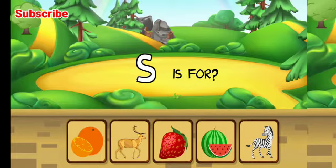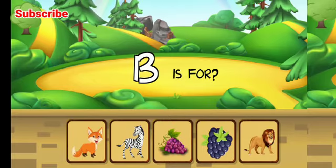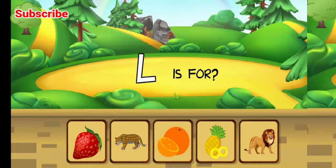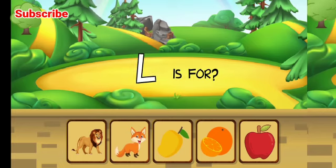S is for strawberry, correct. W is for strawberry, correct. B is for blackberry, awesome. A is for apple, correct. L is for lion, fantastic. L is for...